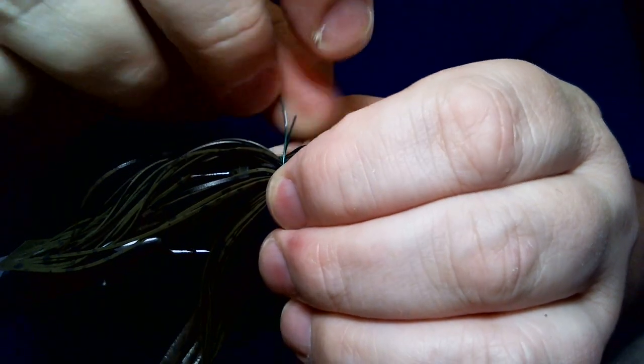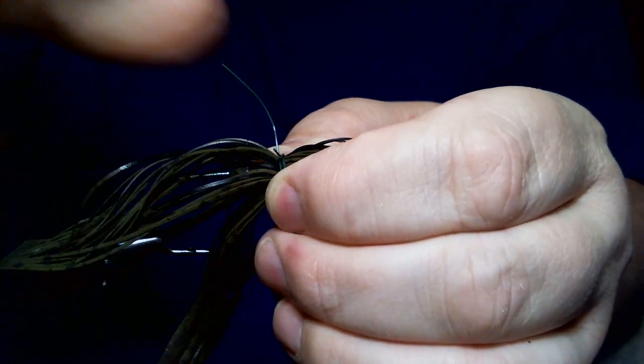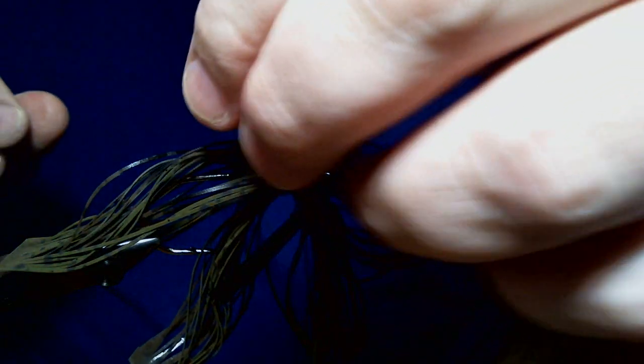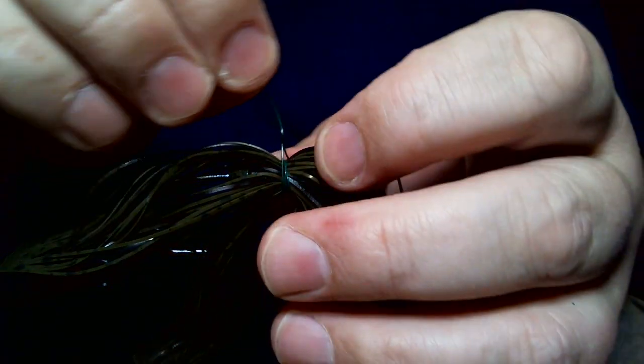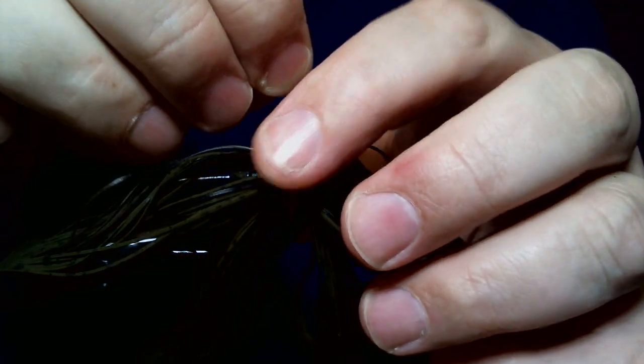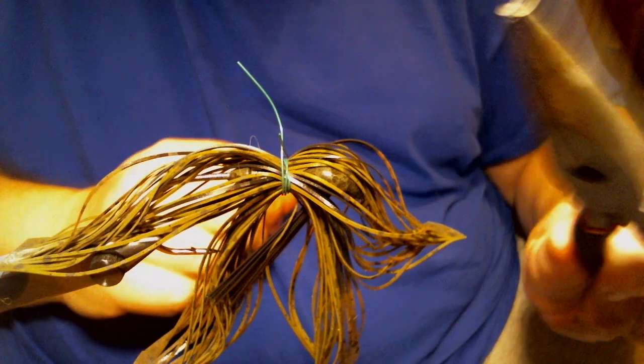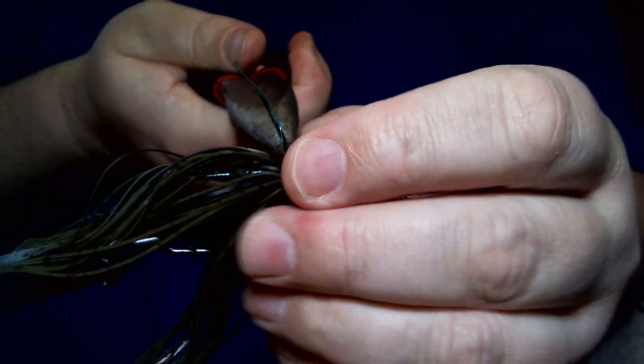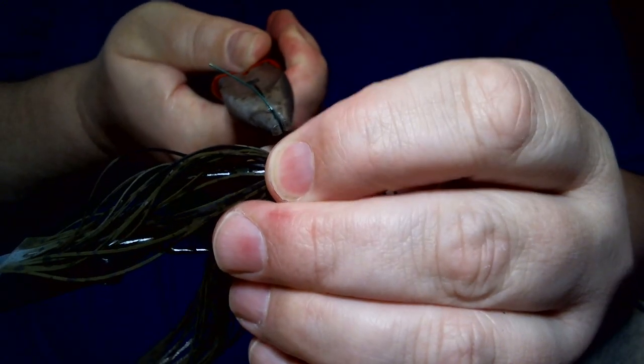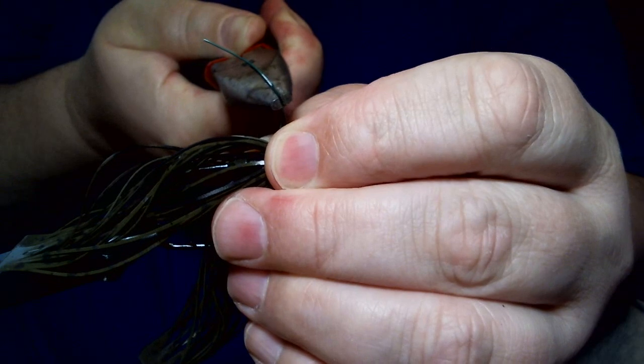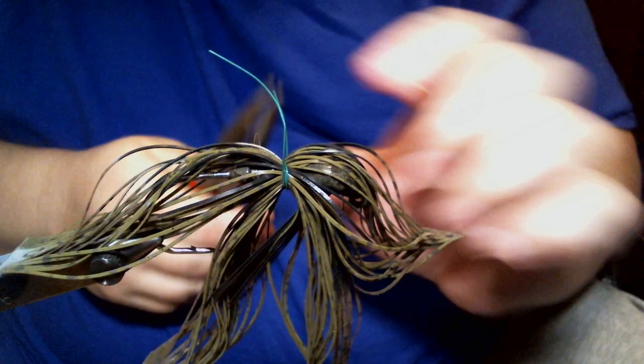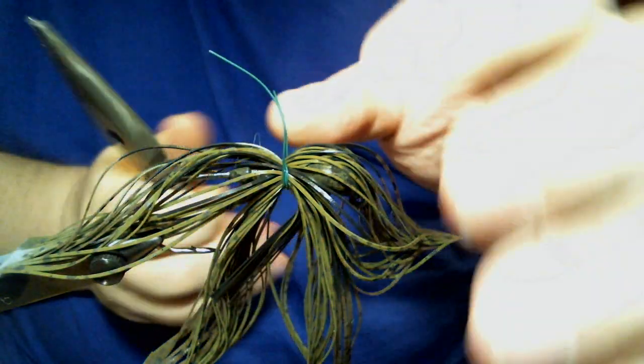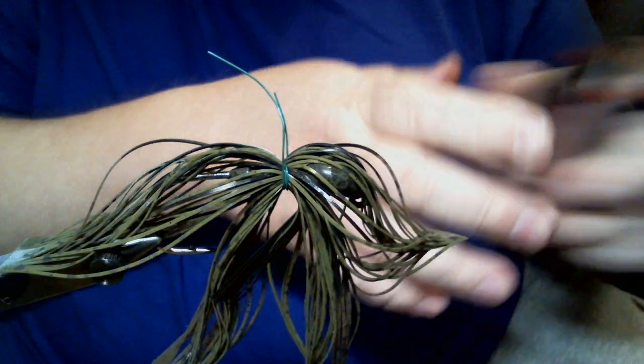I'm going to put the two pieces together like that so they're crisscrossed. And I'm going to take my pliers and I'm going to grab both pieces at the same time and I'm going to pull up and that's going to tighten my skirt down. Instead of trying to wind it tight, just pull it like that and you're good to go.